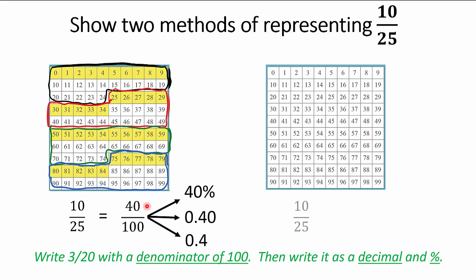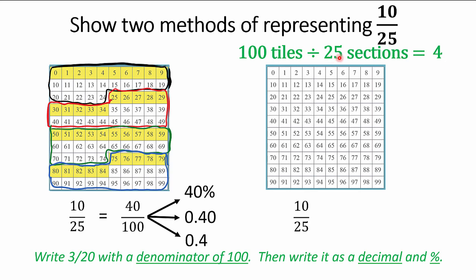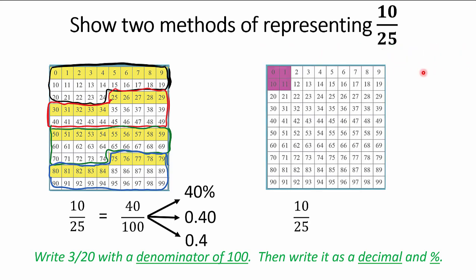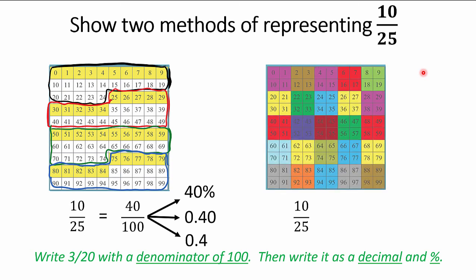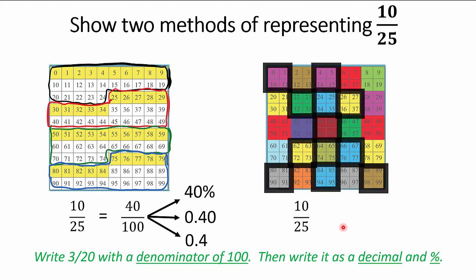Method two for ten twenty-fifths: chop the whole thing into twenty-five parts. With a hundred tiles divided into twenty-five sections, you get four in each section. There are the twenty-five sections. Choose ten of them. Four times ten is forty — we've got 40 out of a hundred. Ten twenty-fifths and 40 out of a hundred are equivalent. Thanks very much for watching.